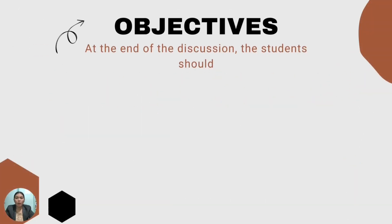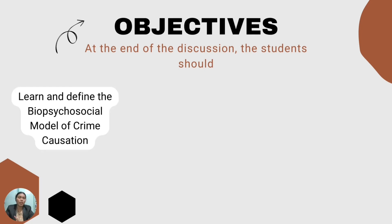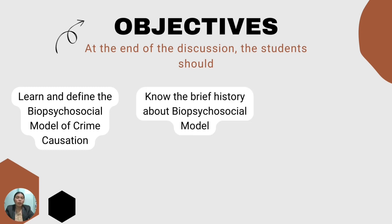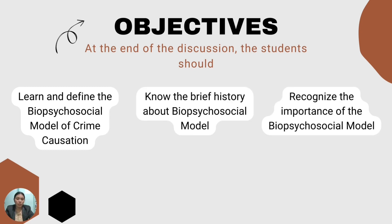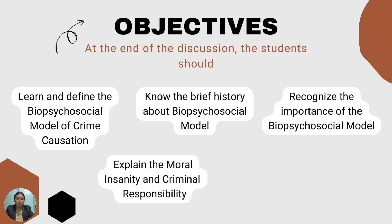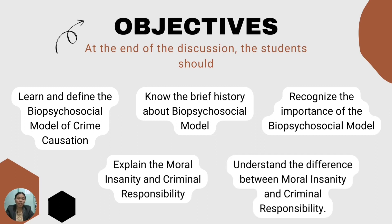These are our objectives. At the end of the discussion, the student should learn and define the biopsychosocial model of crime causation, know the brief history about the biopsychosocial model, recognize its importance, explain moral insanity and criminal responsibility, and understand the difference between moral insanity and criminal responsibility.